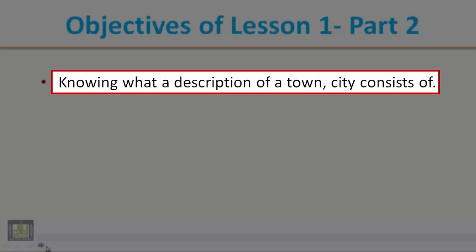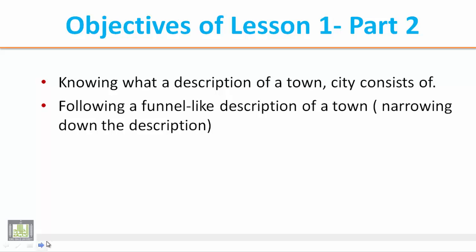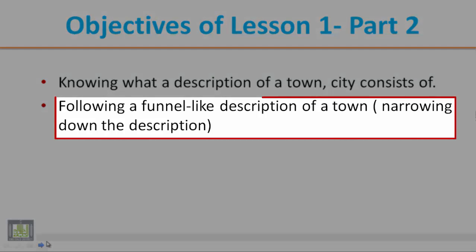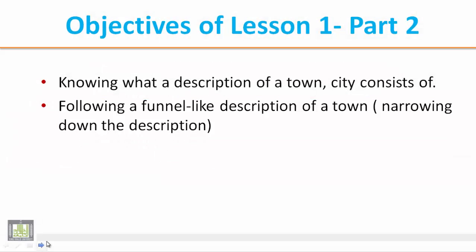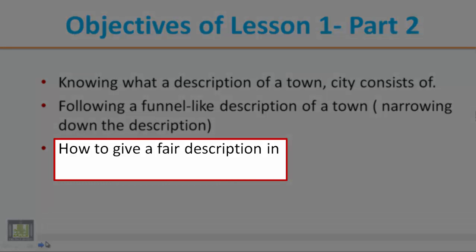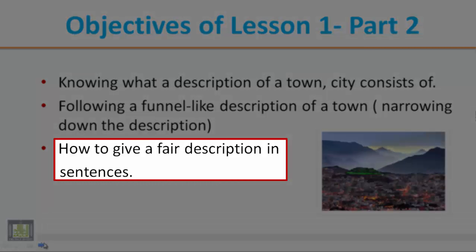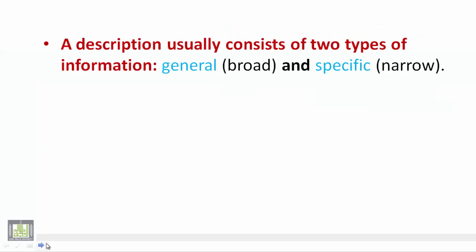The second objective is to teach and instruct students to follow a funnel-like description of a town - كيف نعلم الطالب أن يتبع طريقة في الوصف على شكل القمع - because it starts with general ideas and ends with more specific ideas. The third objective is how to give an adequate description in sentences.